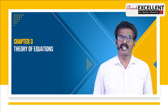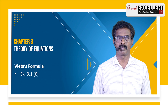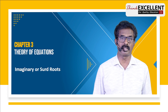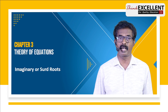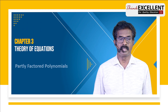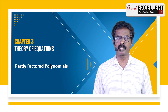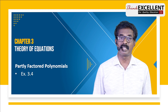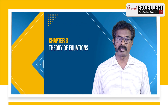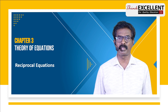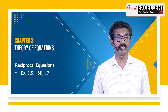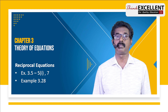Chapter 3: Theory of Equations. Again, very few high-mark questions. Use Vieta's principle — exercise 3.1, question number 6. Then we have imaginary roots: complex roots occur in pairs, and irrational roots also occur in pairs — exercise 3.3, question number 5. Then partly factored polynomials — exercise 3.4, questions 2 and 3, and examples 23 and 24. Then reciprocal equations — exercise 3.5, question 5 first subdivision, question number 7, and example 3.28.